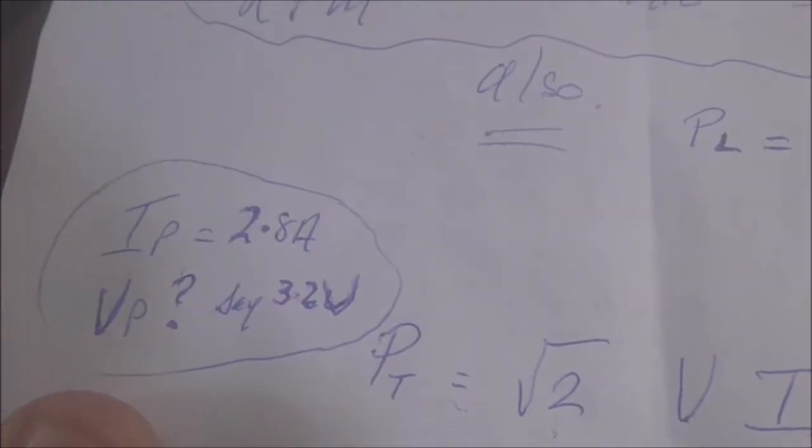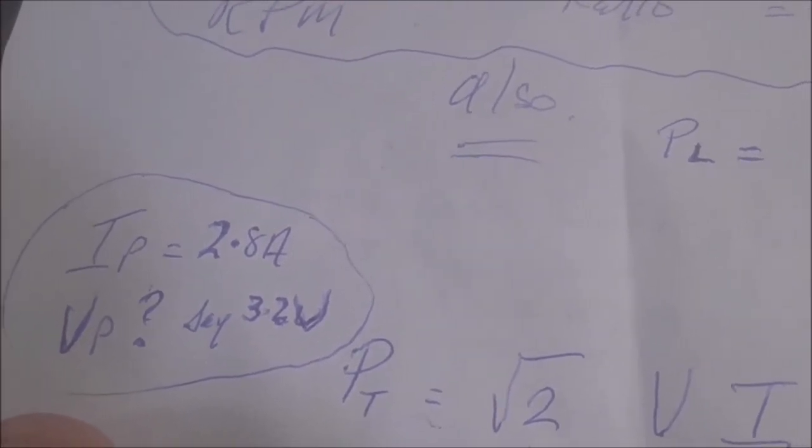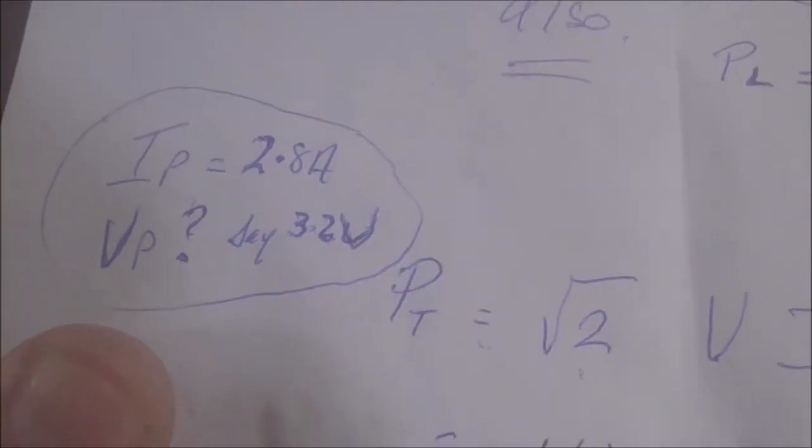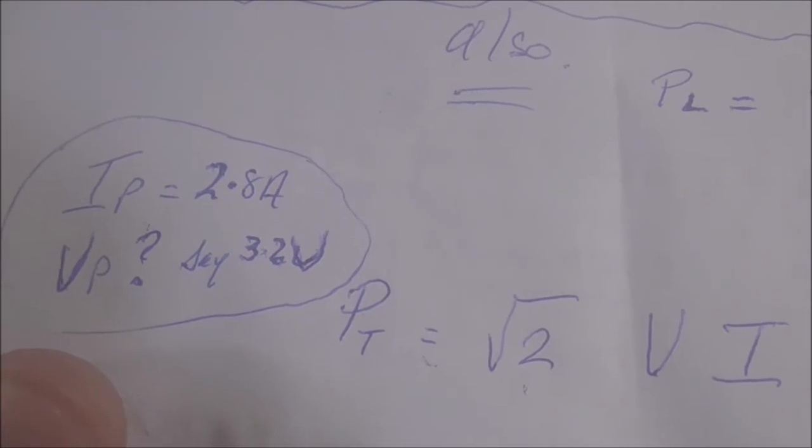Now stepper motors - the one I picked had a current per phase of 2.8 amps, but the voltage per phase is very hard to get because they don't reference voltage.